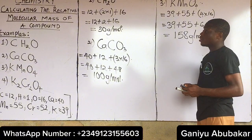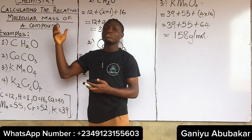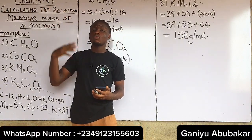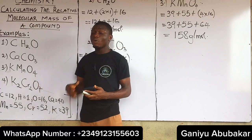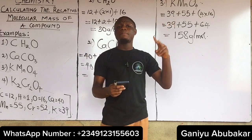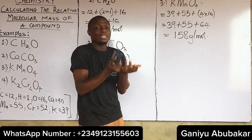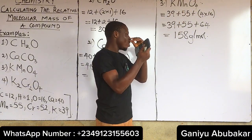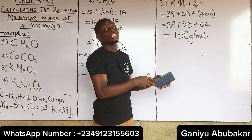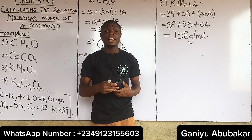In our next class we'll look at how to calculate the percentage composition by mass of an element. I'm giving you two assignments: first, calculate the relative molecular mass of the compound in number four and put your answer in the comment section below. Second, tell me the meaning of Mn — does it mean manganese or something else? Note that Mg is magnesium, so what is Mn? Let me know in the comments.